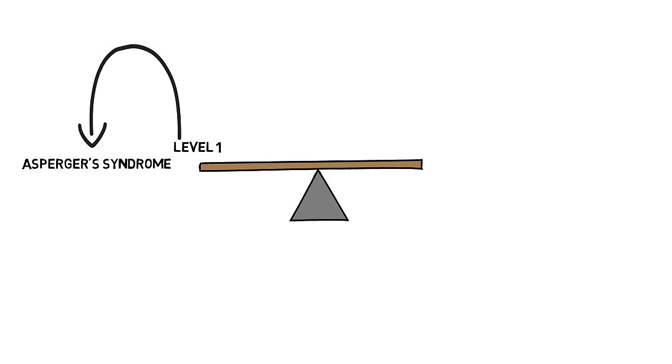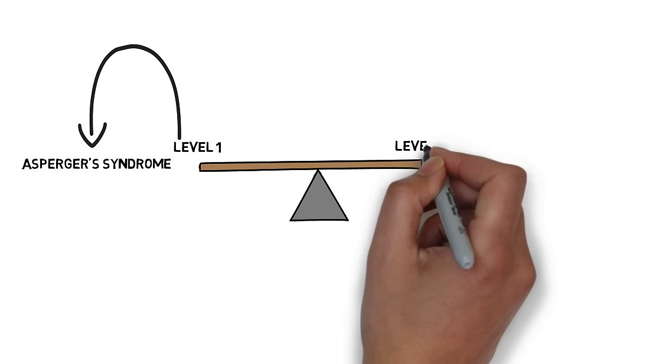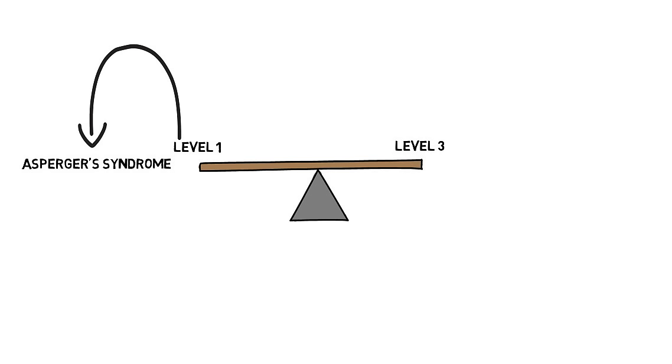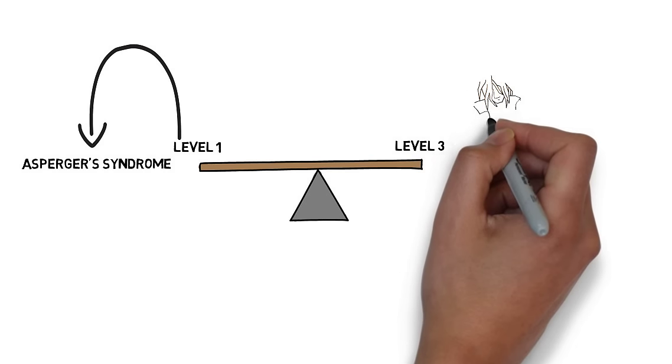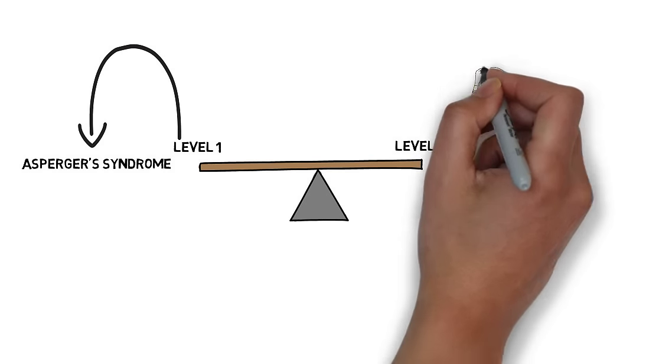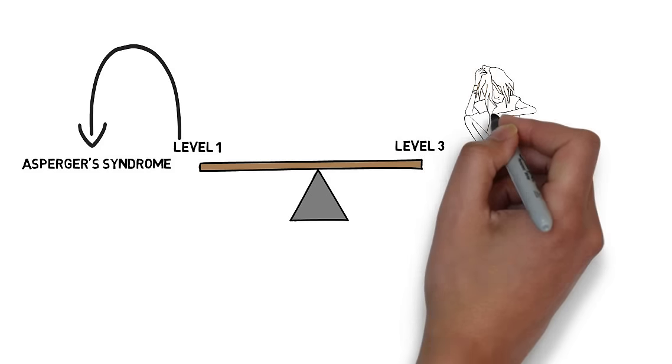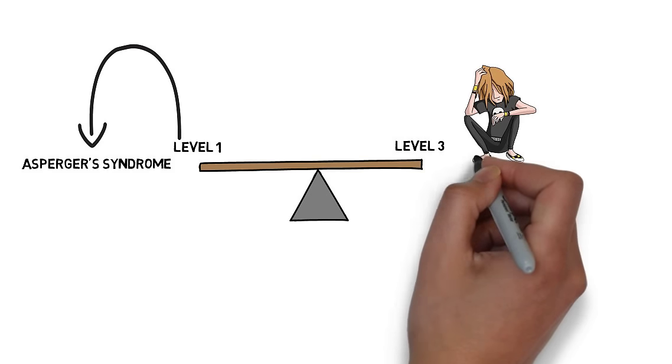At the other side of the spectrum, at severity level 3, a person rarely initiates interactions with others. Their sentences and speech are often incoherent. Change is very problematic, and their symptoms and behavior impact their quality of life significantly.